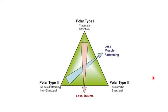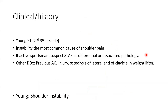This is an example of the Stanmore classification. Type 1 is traumatic and structural. Type 2 is non-traumatic but still has structural lesion. Type 3 has no structural component and is mainly due to muscle patterning. As you move away from Type 3 there is less muscle patterning; as you move away from Type 1 there is less trauma.